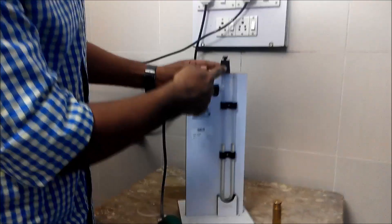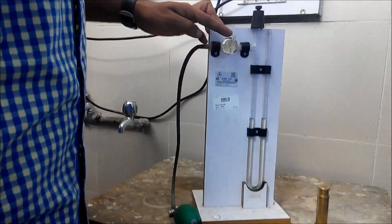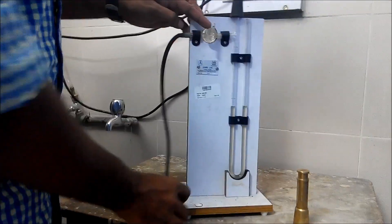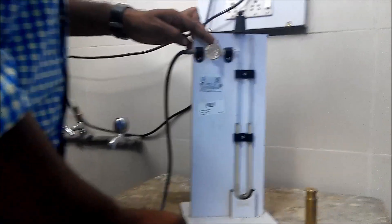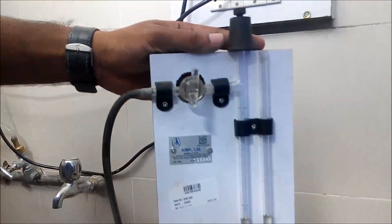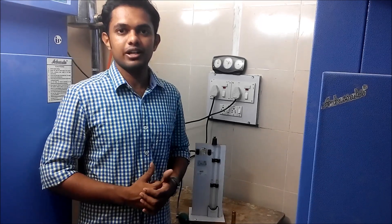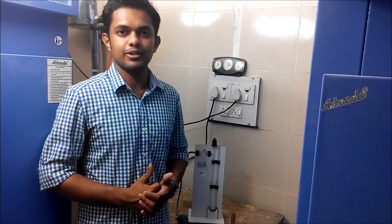The U-tube manometer has two limbs. One limb is provided with a stopcock and a pressure bulb. This is used to create differential air pressure between these two limbs. And the other limb is open to atmosphere. After I explain the various parts of Blaine's apparatus, let's perform the experiment.